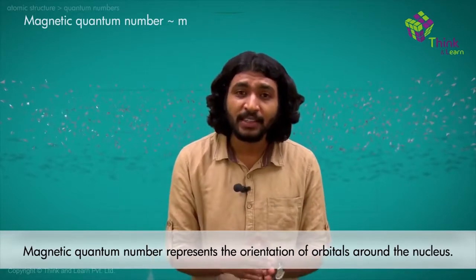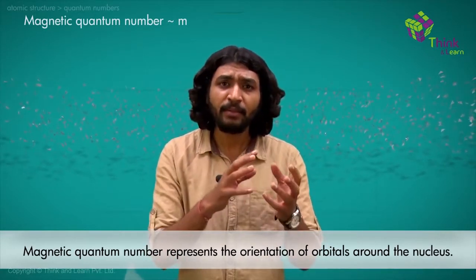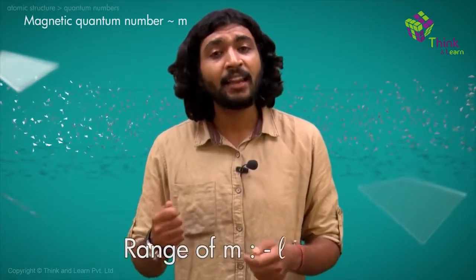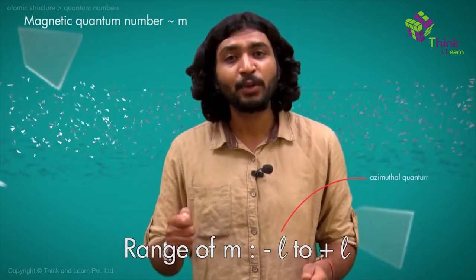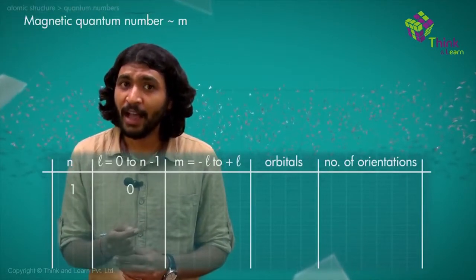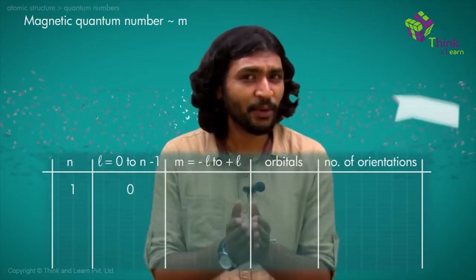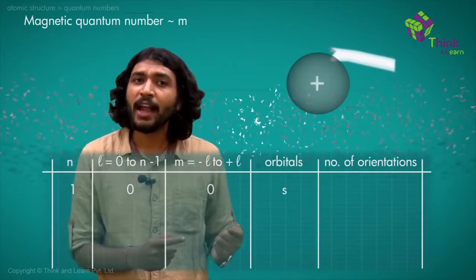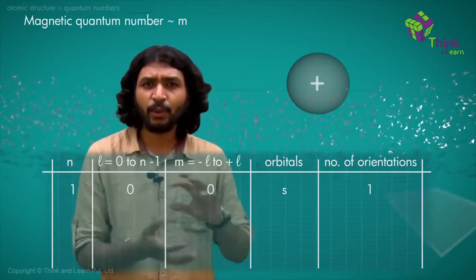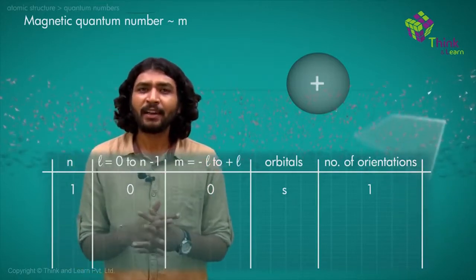The next quantum number is the magnetic quantum number, indicated by the letter M. It indicates the orientation of orbitals around the nucleus — in how many different positions these orbitals can arrange themselves. The magnetic quantum number ranges from −L to +L. For energy level 1, N = 1, L = 0, so M = 0, meaning the S orbital has only one possible orientation. This is intuitive: since the S orbital is spherical, there is only one way a sphere can orient around itself.